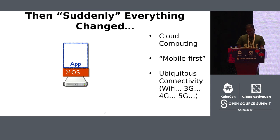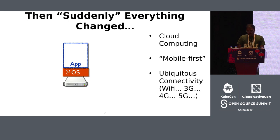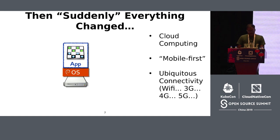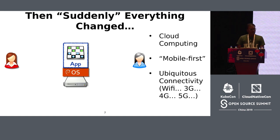But suddenly everything changed. Cloud computing happened, everybody moved to smartphones and mobile-first strategies, with ubiquitous network connectivity and high-speed internet everywhere. The type of applications changed. Suddenly we have social media applications like Twitter, Pinterest, and Facebook, and some previously existing single-user applications also became collaborative multi-user applications. There are fairly significant differences with today's applications in their nature and the kind of development we need to do.